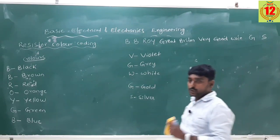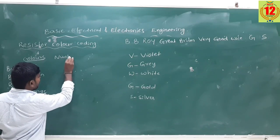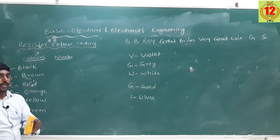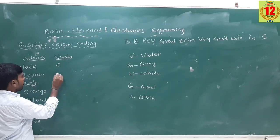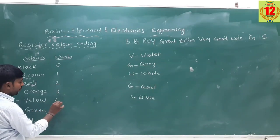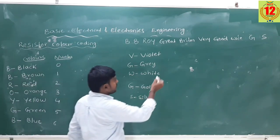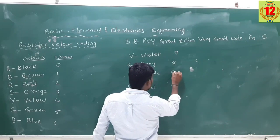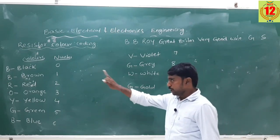Now, the numbers. Black is 0, Brown is 1, Red is 2, Orange is 3, Yellow is 4, Green is 5, Blue is 6, Violet is 7, Gray is 8, White is 9. These are the numberings from 0 to 9.